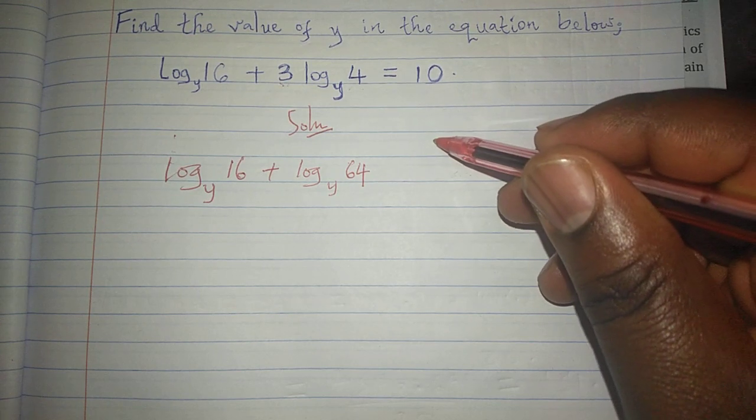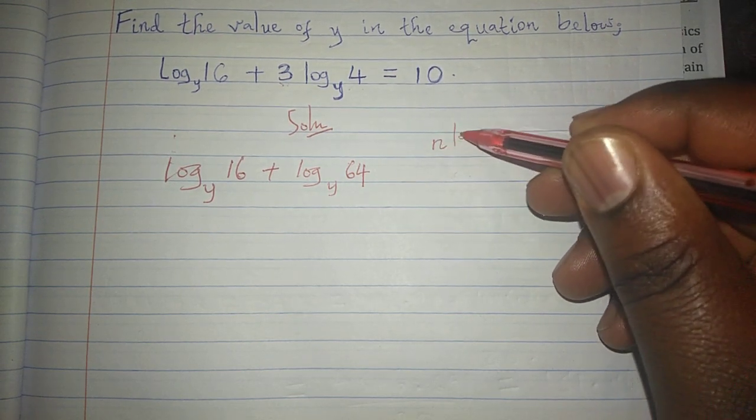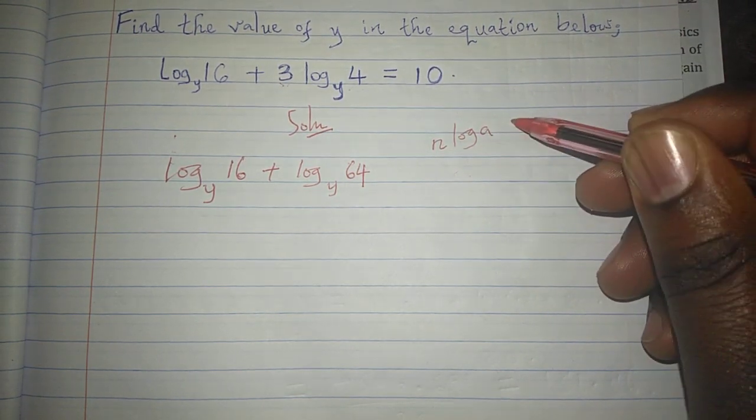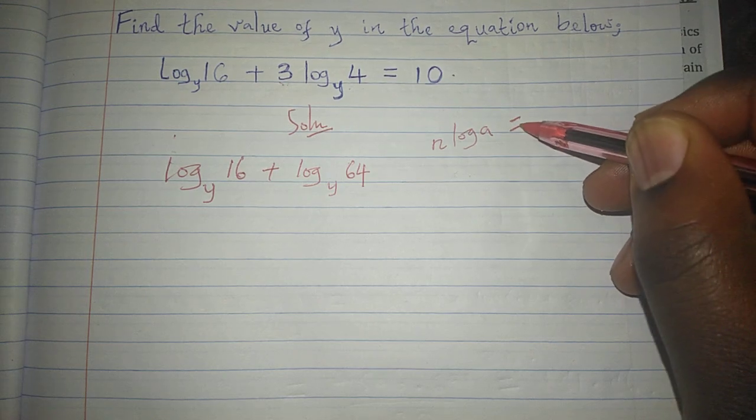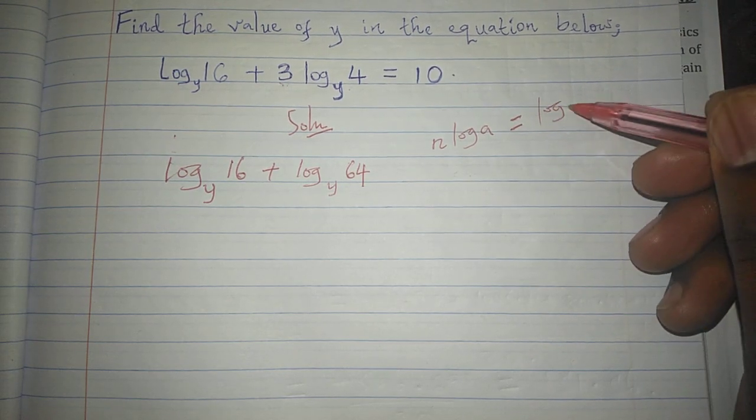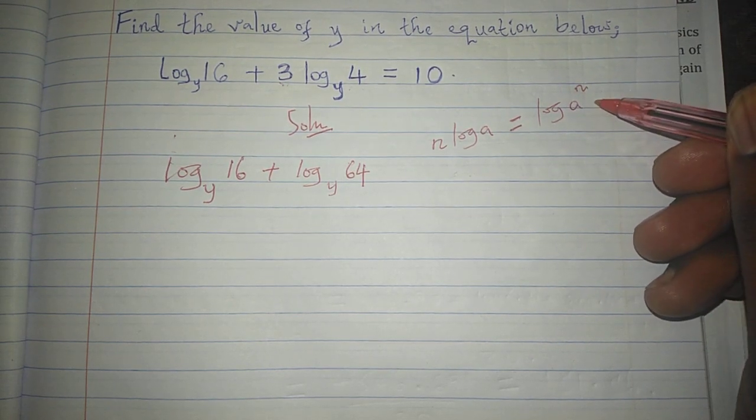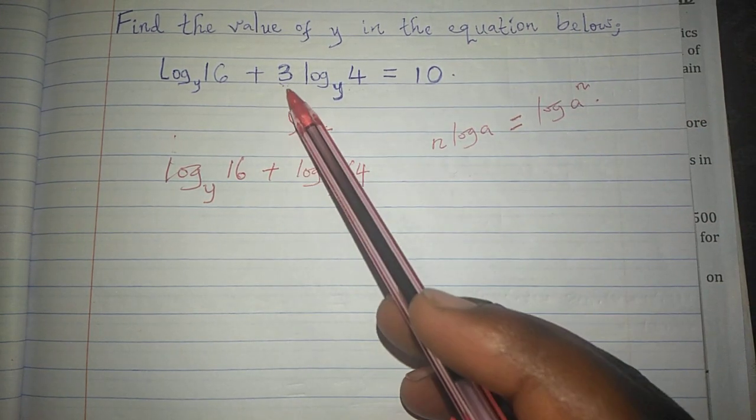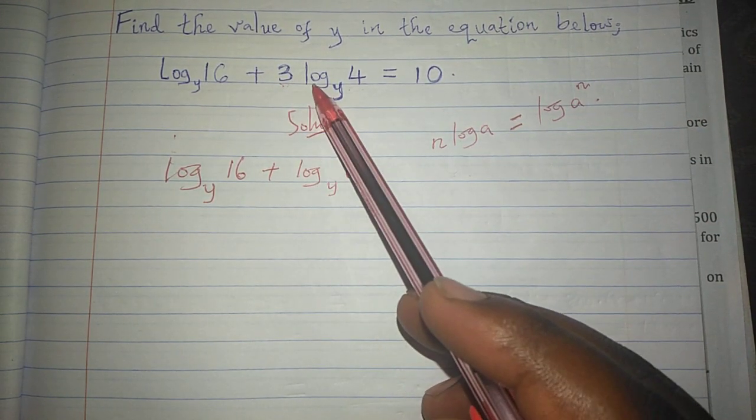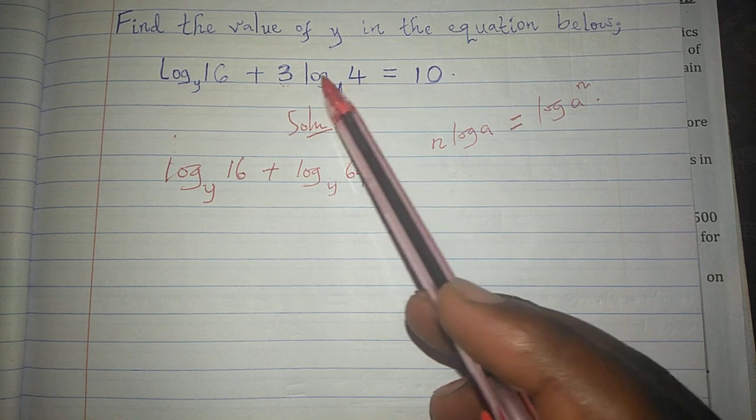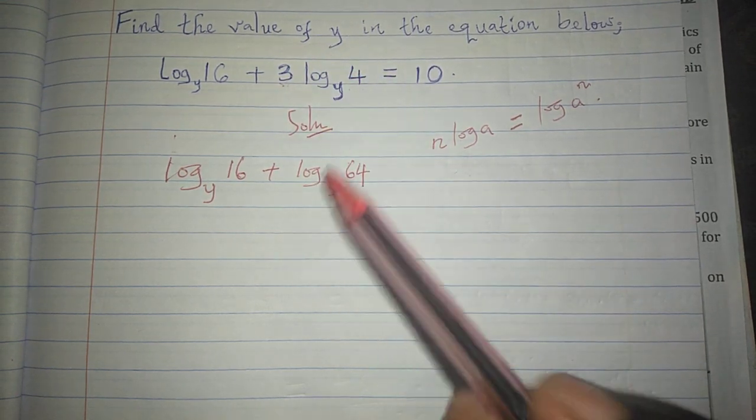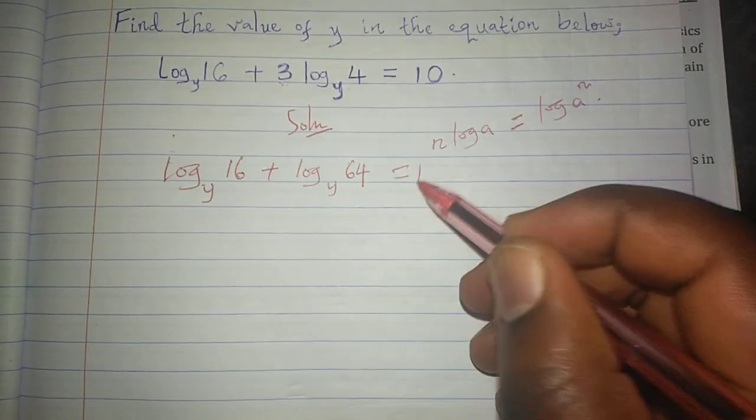Because we know that when we have n times the logarithm to base y of a, this can be solved by taking the logarithm of a raised to n. So we apply it at this stage: logarithm to base y of 4 raised to 3, which should give us 10.